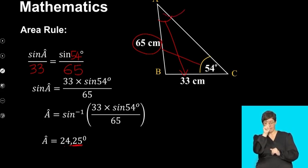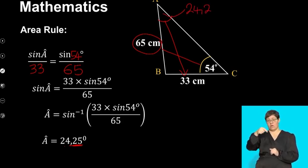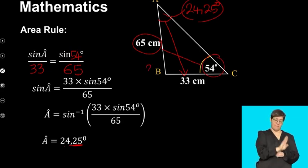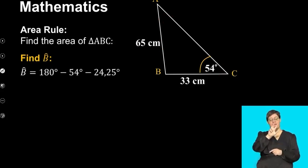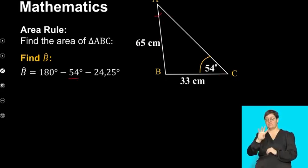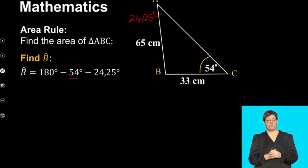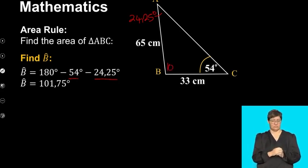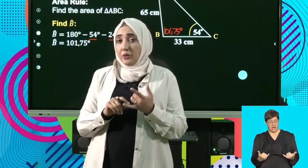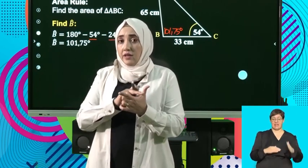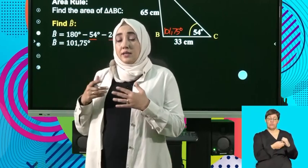So angle A is 24.25 degrees. Now we've got to use these two angles — angle A and angle C — to calculate angle B. So we subtract the angle 54 that was given and the angle 24.25 that we found, subtracting from 180 degrees, and we find that angle B is 101.75 degrees. We've found angle A, we've found angle B, and now we have our V pattern: a side, angle B in the middle, and another side. So now we're going to substitute that into our area formula.